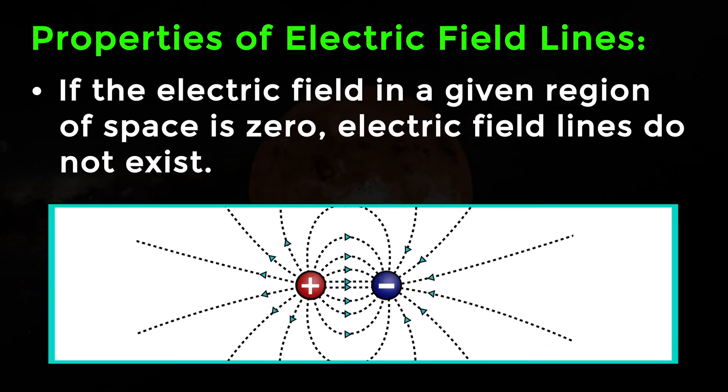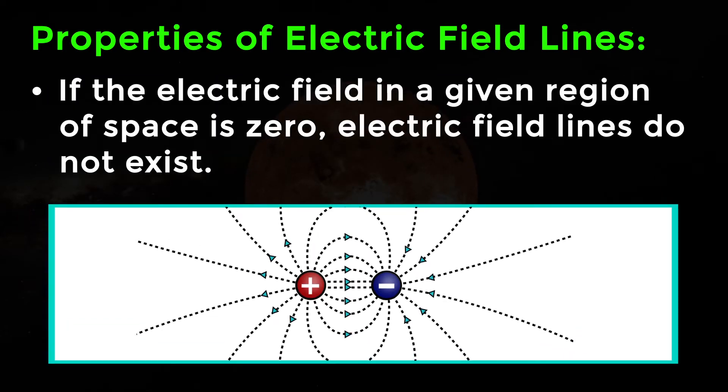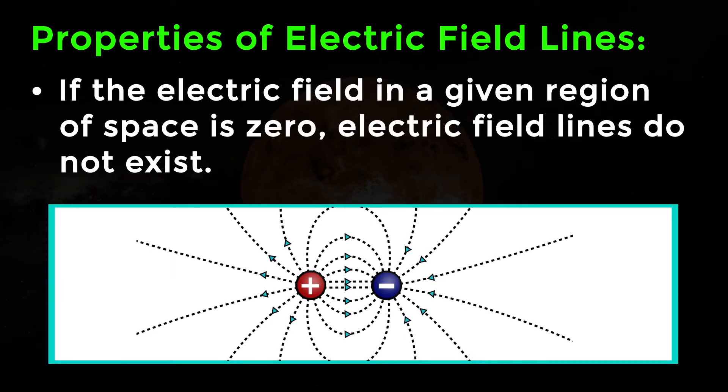If the electric field in a given region of space is zero, electric field lines do not exist.